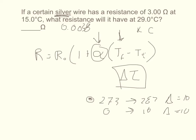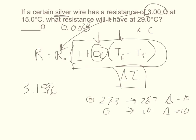So if you plug everything in right, you should get an answer of the new resistance is 3.1596. I forgot to point out, the original resistance was 3, so you plug in 3 here and you're going to take 3 times a number that's just a little bit larger than 1, so it makes sense you would get a number just a little bit larger than 3 as your answer.